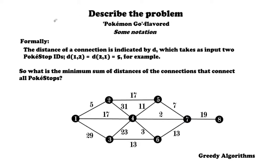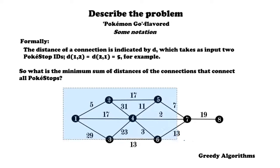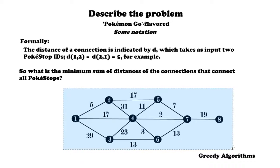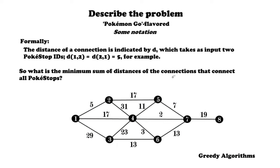Let's come up with some formal notation for this problem. The distance of a connection is indicated by D, which takes as input two Pokestop IDs. For example, D(1,2) is the same as D(2,1), which equals 5 — so the distance between Pokestop 1 and Pokestop 2 is 5. The key question is: what is the minimum sum of distances of the connections that connect all Pokestops?